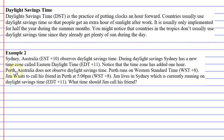Perth in Australia does not observe daylight savings time. Perth runs on Western Standard Time, which is WST plus 8. They are eight hours ahead of UTC.